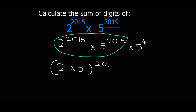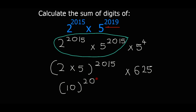We know that 5 to the exponent 4 is 625. So now we can write this as 10 to the exponent 2015 times 625.